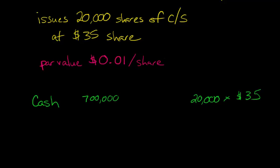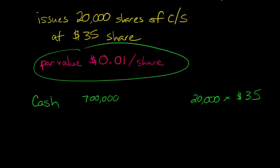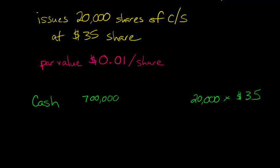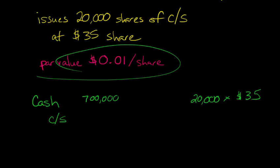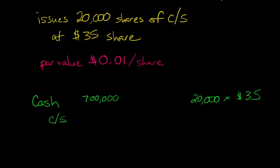Now let's go to the credit side. We've got something going on with this par value, and as we talked about in our last video, we're going to have a credit to common stock. How do we compute that? We'll take the same 20,000, but now we're multiplying it by the par value per share. So we're going to have 20,000 times a penny, times $0.01 per share. And so that's going to give us a credit to common stock of just $200.